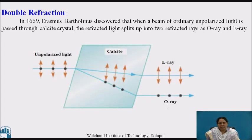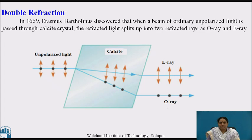In 1669, Erasmus Bartholinus discovered that when a beam of ordinary unpolarized light is passed through a calcite crystal, the refracted ray splits into two refracted rays — the O-ray and the E-ray. The O-ray travels through the calcite crystal without deviation, while the E-ray is refracted at some angle.